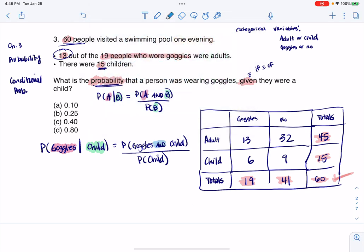Anytime we have an 'and' and we're on a table, we look for where the row and column overlap, and divide that by the total. I'm gonna go with the goggles column and the child row. When I look at that overlap, it was right here at six. So my numerator is gonna be six out of 60.